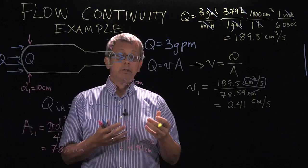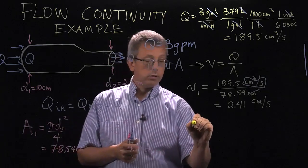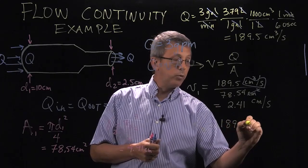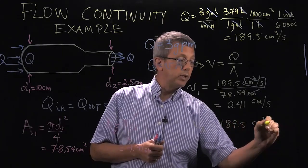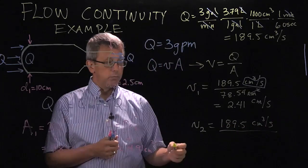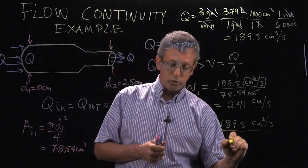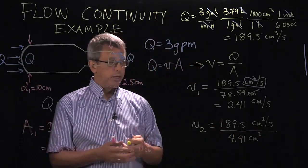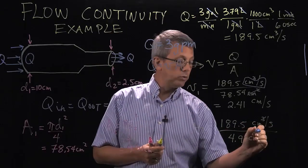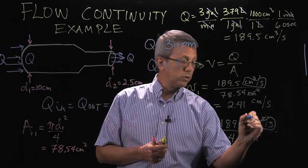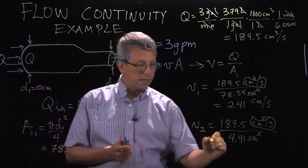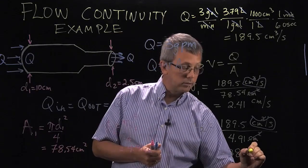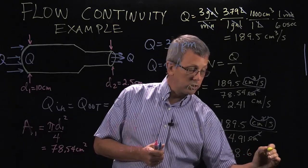However, when I spray the hose, the outside speed is going to use the same flow rate, centimeter cubed per second, but now we use the much smaller 4.91 centimeters squared. Again, we get the same cancellation of units. And our final velocity value is 38.6 centimeters per second.